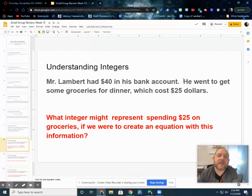So Mr. Lambert has $40 in his bank account. He went to get some groceries for dinner, which cost $25. What integer might represent spending $25 on groceries? If you were to create an equation with this information, so what would I do with 25 that shows that I'm spending it? Well, because I'm spending it, that is taking away. And my amount of money that I'm taking away, well, $25. So I would get -$25. So -$25 would be my new value here that would represent spending $25.